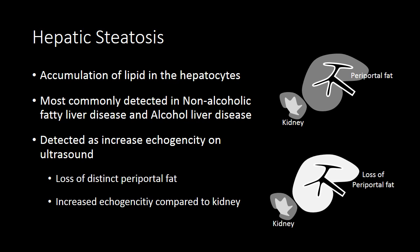When we are using ultrasound to try to detect hepatic steatosis, we're specifically trying to determine if the echogenicity of the liver is increased, and we have two internal references to compare the liver to: one, the periportal fat, and two, the echogenicity of the kidney.